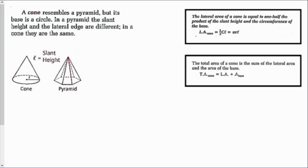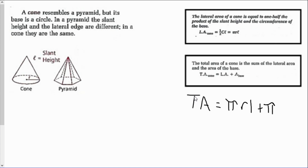A cone resembles a pyramid, but its base is a circle. In a pyramid, the slant height and lateral edge are different, but in a cone they are the same. So the lateral area of a cone equals one half the product of the slant height and the circumference of the base, or πrl. The total area of a cone is the lateral area plus the area of the base: πrl + πr².